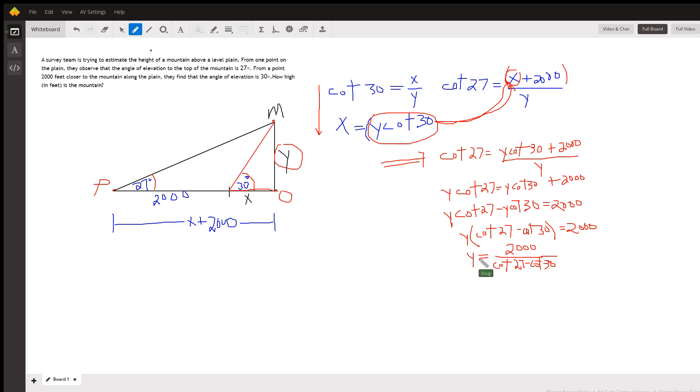Finally, to solve for y, divide by the coefficient of y, which is cotangent 27 minus cotangent 30. So use your calculator, make sure you're in degree mode, and you probably want to use parentheses around that denominator to make sure that operation is being performed correctly.